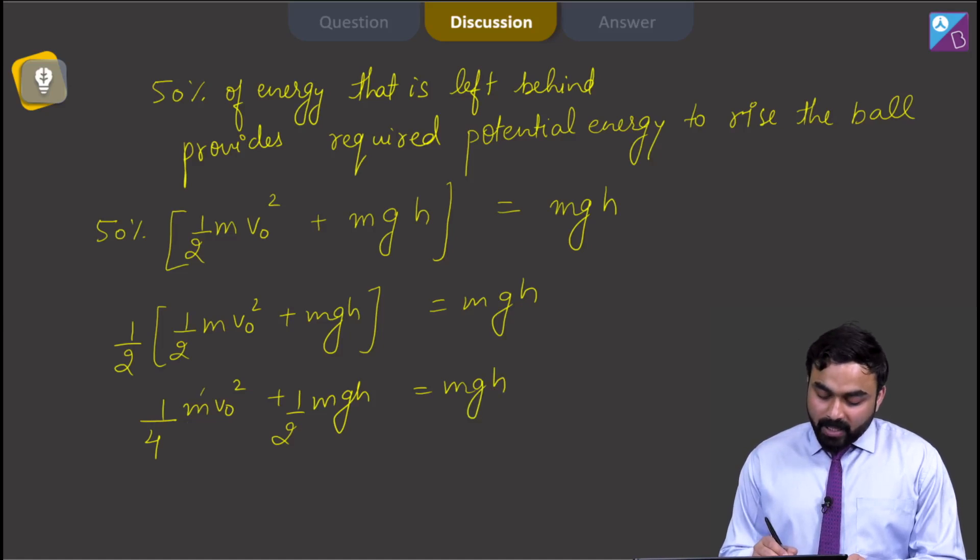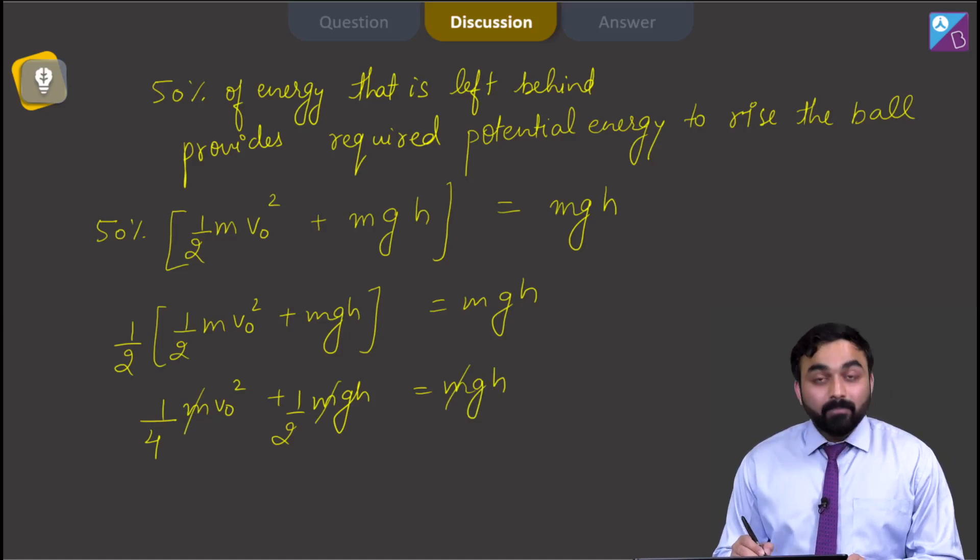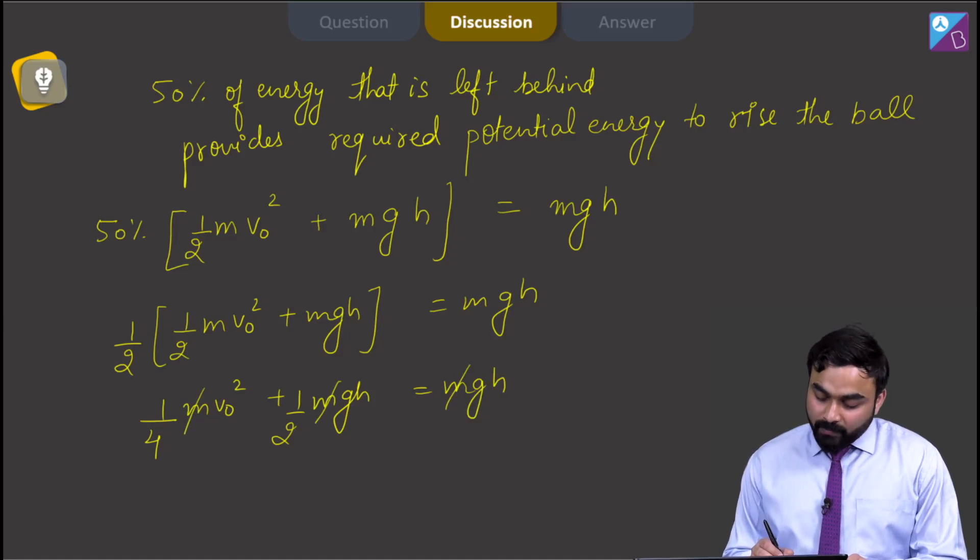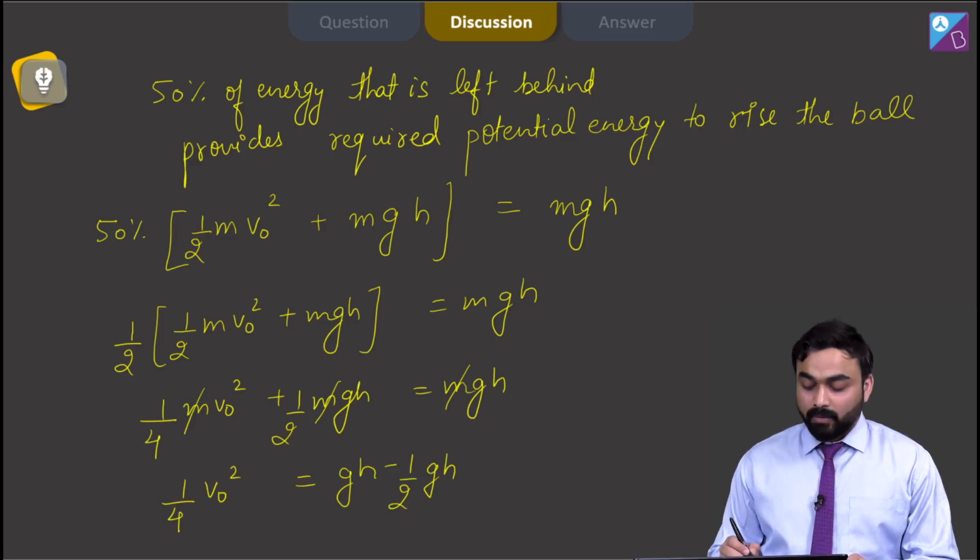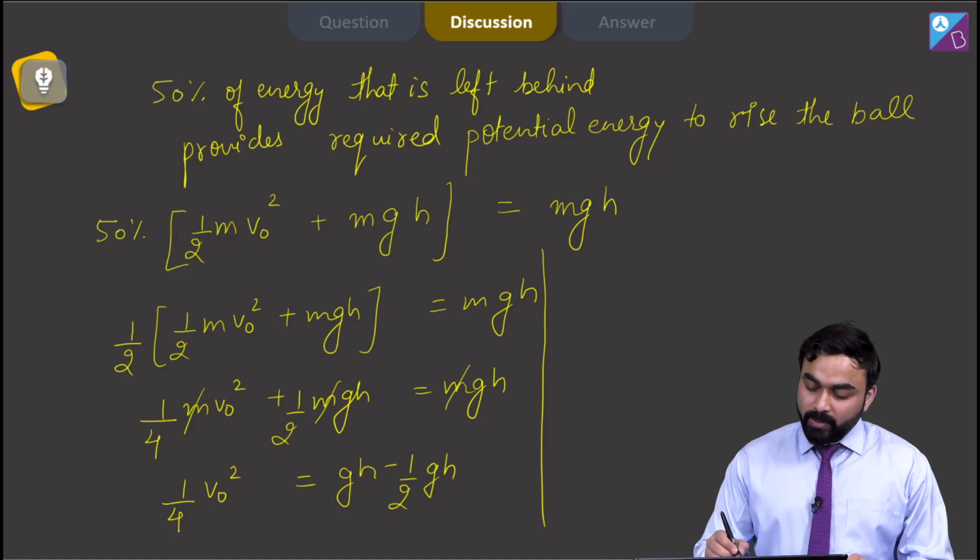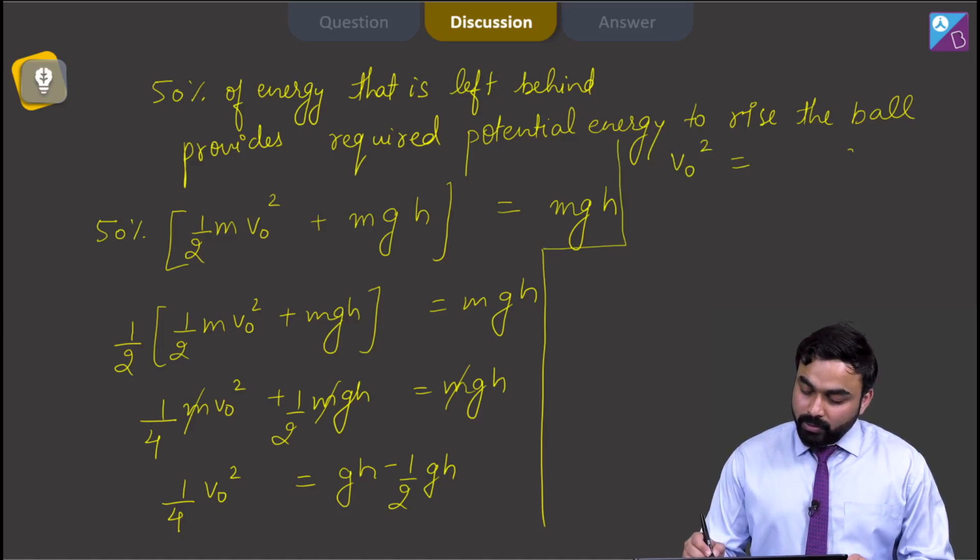So here, I can cancel these m. Also 1 by 4 m. Clear students, see, 1 by 4 v0 square will be equal to gh minus half gh. So this will be v0 square equal to gh into 4 by 2.